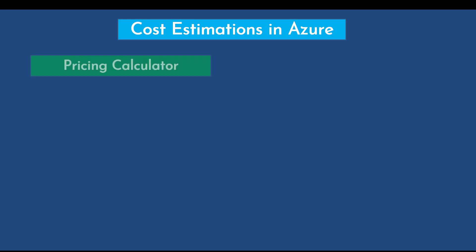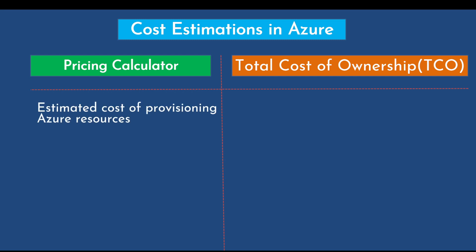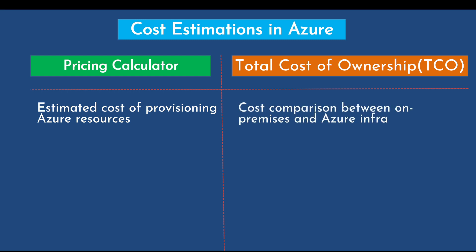Now let's look at cost estimation in Azure. We have two tools: the Pricing Calculator and the Total Cost of Ownership (TCO). Both are used to estimate cost, but there is a key difference. The Pricing Calculator provides cost estimation for provisioning Azure resources, while the TCO provides a cost comparison between your on-premises infrastructure and the equivalent Azure services — for example, comparing two on-premises servers and database servers against equivalent Azure VMs and database instances.